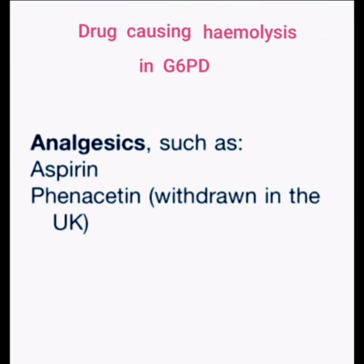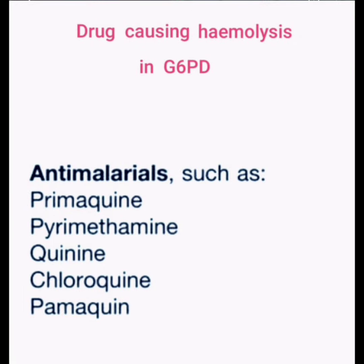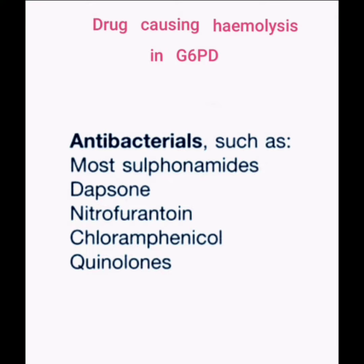The analgesic drugs that cause hemolysis in G6PD deficiency are aspirin and phenacetin. The antimalarial drugs include primaquine, pyrimethamine, quinine, chloroquine, and pamaquine.